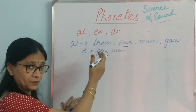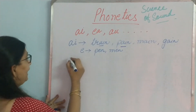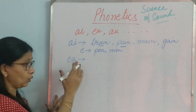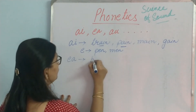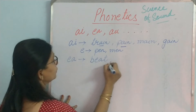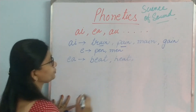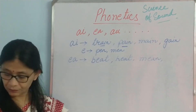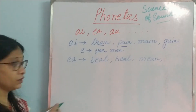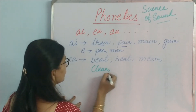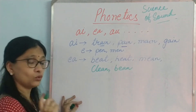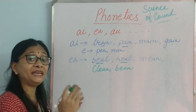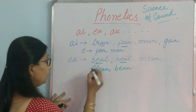Next, let us take the combined vowel EA. What is the sound that comes from this? Let us take the word beat, heat, then mean, then clean, bean, and so on. EA — what sound does it give? Beat — this is an EE sound, isn't it?